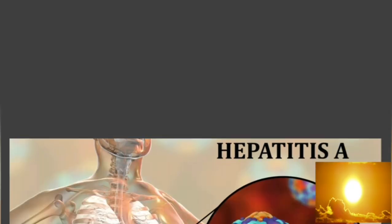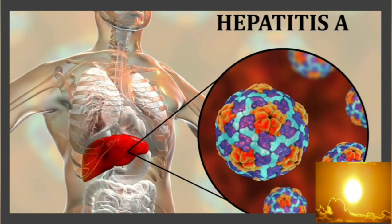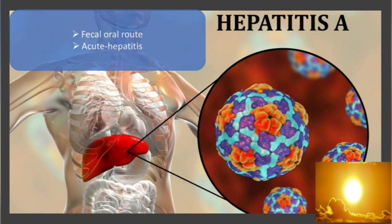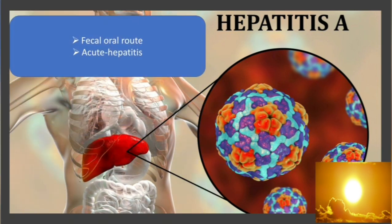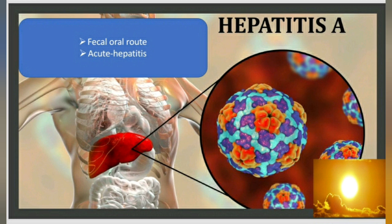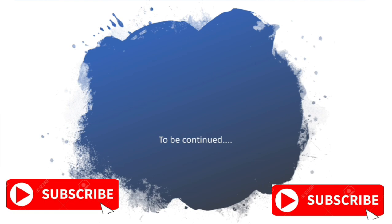Now let's talk about the hepatitis A virus. In this course you are going to learn about hepatitis A through hepatitis E, but you have to remember that the hepatitis A virus is actually a picornavirus. Hepatitis A is transmitted through the fecal-oral route, it causes acute hepatitis — and acute means the infection will last less than six months. Thanks for watching.